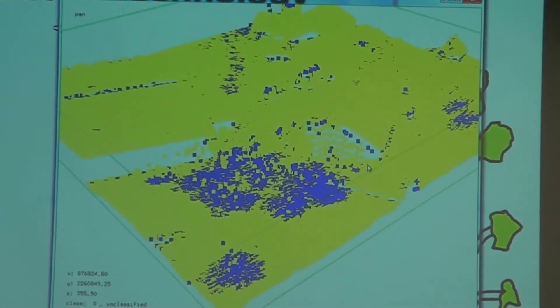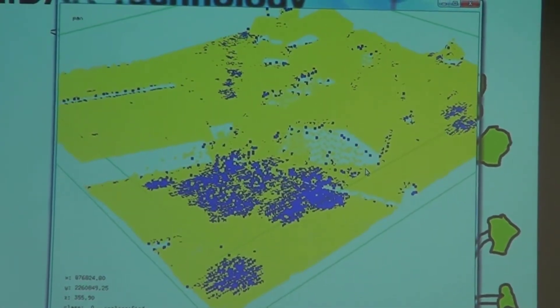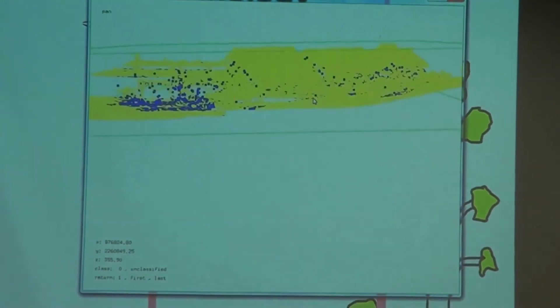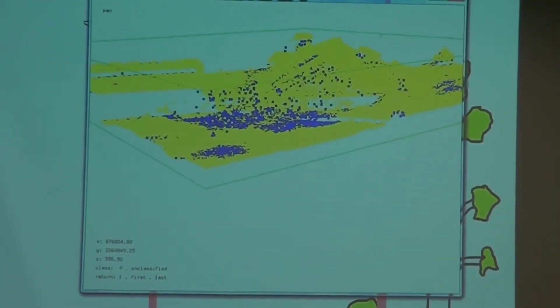So one thing I would like to point out, and I repeat that a few times, last returns are not ground returns. The ground returns, the ones we always hope to get, are usually a subset of the last returns. And especially in forestry areas, it's often a very small subset. And we use filtering algorithms, in this case last ground, or classification algorithms, to get the ground.